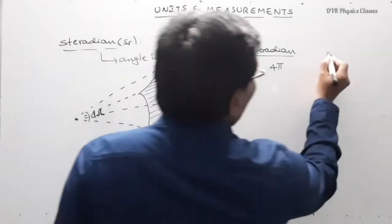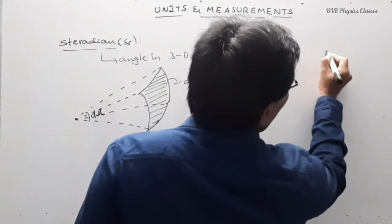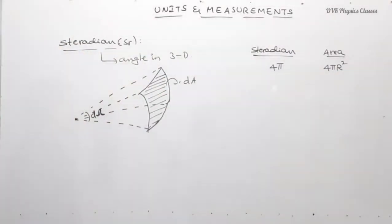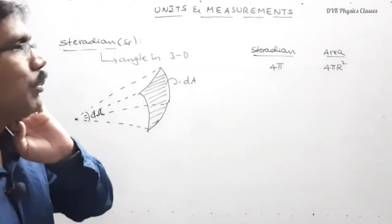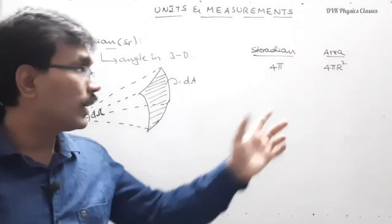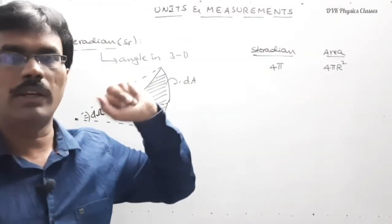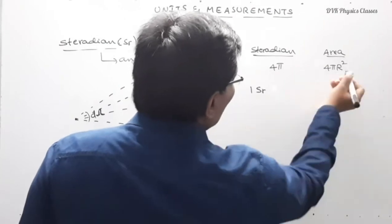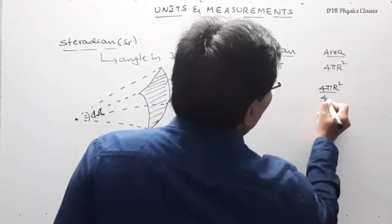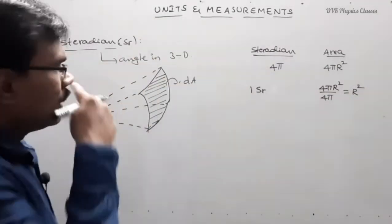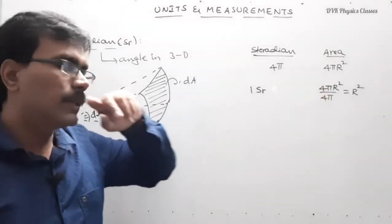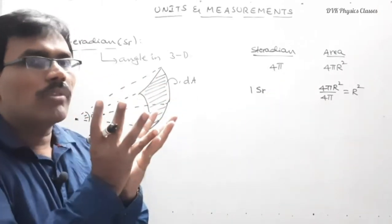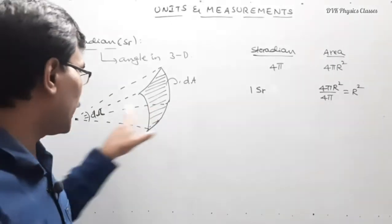4 pi steradian is made by the total surface area. The total surface area of a sphere is 4 pi r square. So a sphere makes an angle of 4 pi steradian at the center. For 4 pi steradian, the area covered is 4 pi r square. For one steradian, the area should be 4 pi r square divided by 4 pi, which equals r square. So when an area equals the square of the radius, that is one steradian.